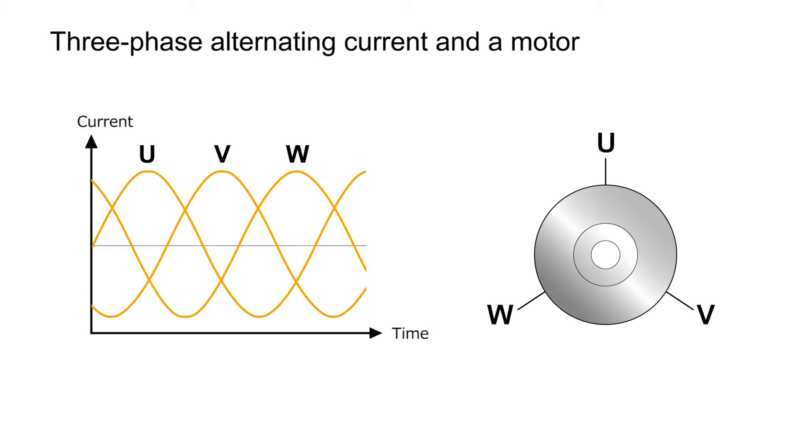Three-phase AC waveforms consist of three sine waves which are shifted by 120 degrees from each other. Three-phase motors supply these three alternating currents to the three terminals respectively to rotate a rotor. The number of motor rotations is controllable by the frequency of alternating currents.